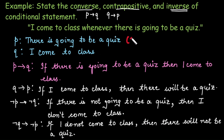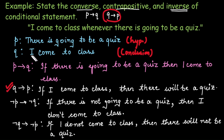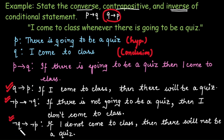The first step is always to identify the hypothesis and then identify the conclusion. Once you have those, you can directly write the converse, which is Q implies P — simply put 'if' over Q, then write the P statement. After that, write the inverse: not P implies not Q — add 'not' to the P statement and 'not' to the Q statement, then write it in if-then form. Similarly, write the contrapositive: not Q implies not P — write not Q with 'if', then not P.